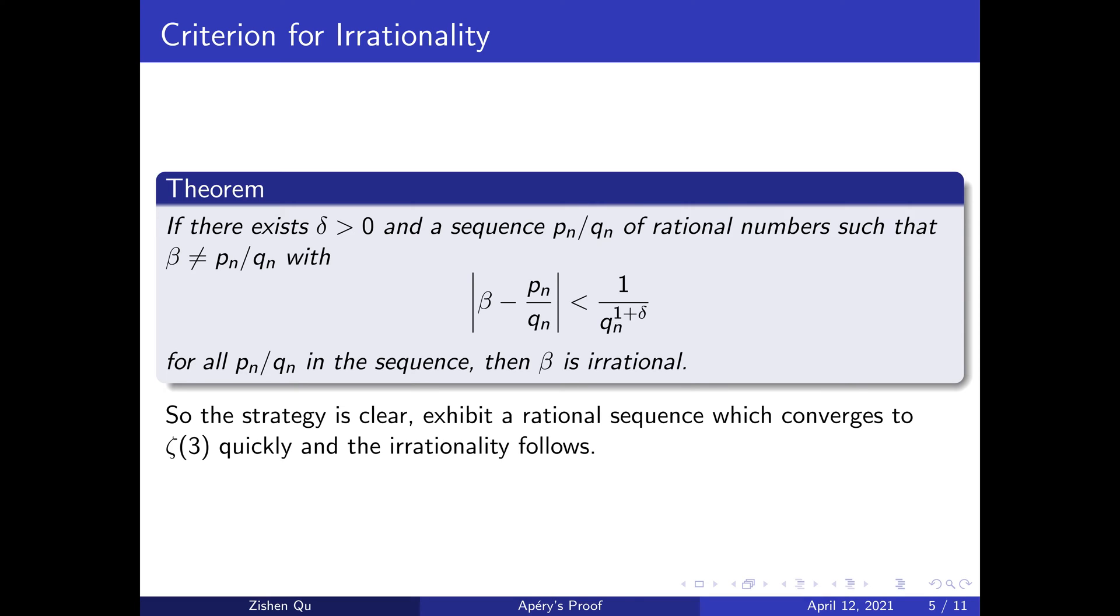So the strategy for showing that ζ(3) is irrational is clear. Find such a sequence of good rational approximations.